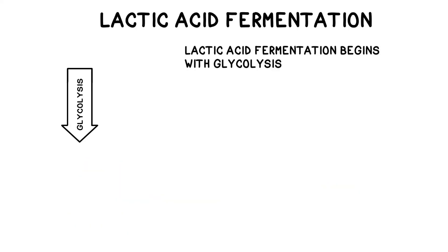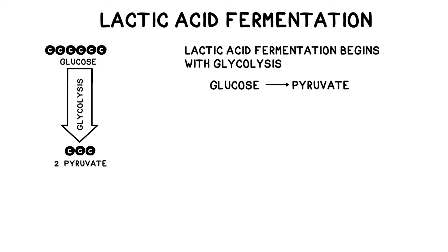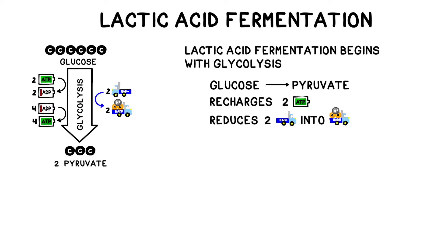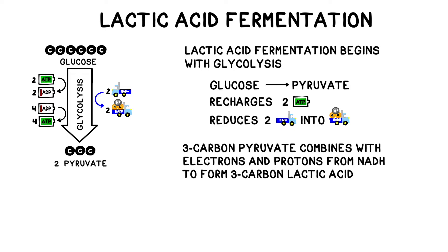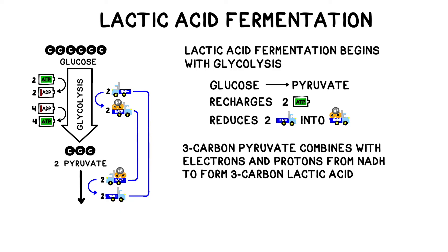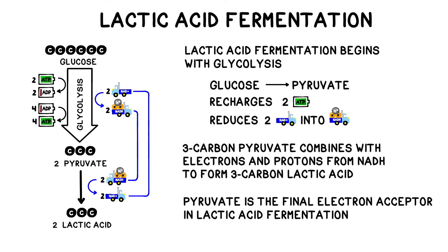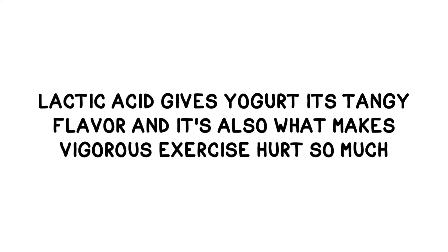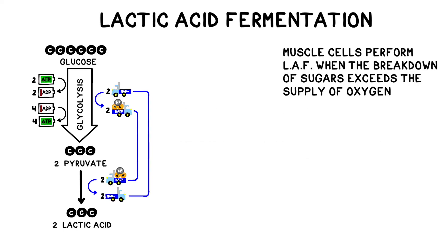Let's look at each fermentation pathway more closely, starting with lactic acid fermentation. Lactic acid fermentation begins with glycolysis, where glucose is ultimately converted into pyruvate, recharging a net amount of 2 ATP and reducing 2 NAD+ into 2 NADH. The three-carbon pyruvate molecule combines with the electrons and protons from NADH and forms three-carbon lactic acid. Because the pyruvate picks up the electrons, it's considered to be the final electron acceptor in lactic acid fermentation. Notice how the production of lactic acid oxidizes NADH back into NAD+ needed to keep running glycolysis and churning out 2 ATP each time. The production of lactic acid is what gives yogurt its tangy flavor and is also what makes vigorous exercise hurt so much. Muscle cells perform lactic acid fermentation when the breakdown of sugars exceeds the supply of oxygen being delivered by the blood, making aerobic respiration no longer feasible.